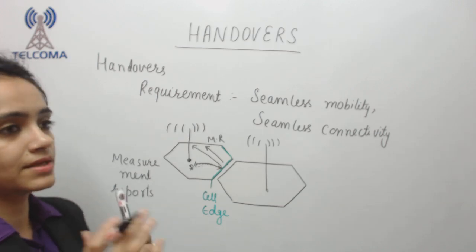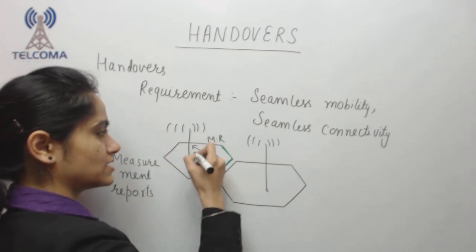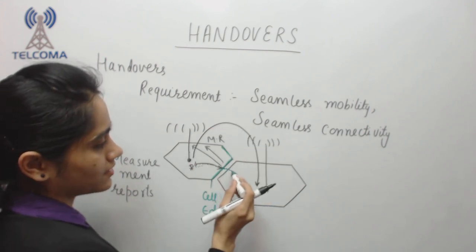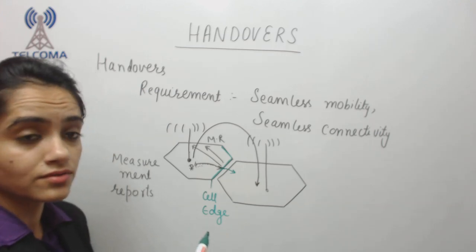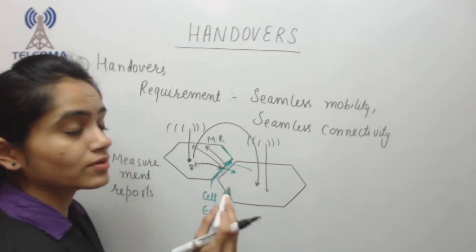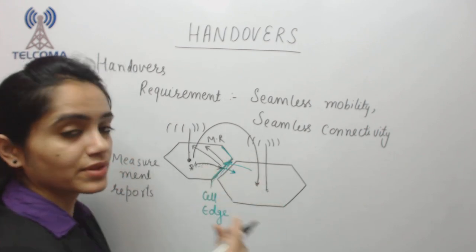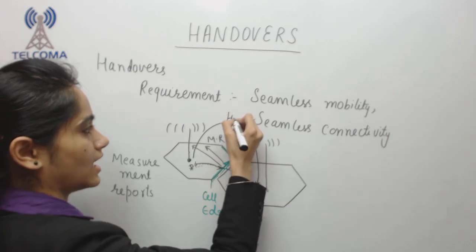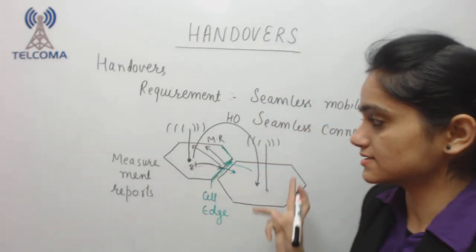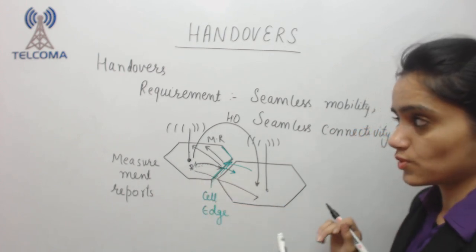The user equipment sends a measurement report to the cell saying: I am going to a poor network area, please grant me a handover to another cell. The granting of handover from this cell to another cell happens because you are moving, you are entering a new cell, going into a poor coverage area, and getting a better signal from another cell. This process is known as handover — passing control from one cell to another cell whenever we are moving.